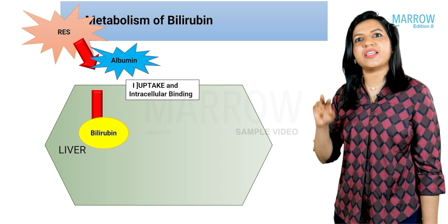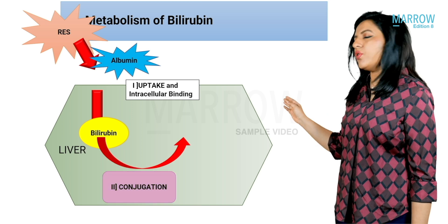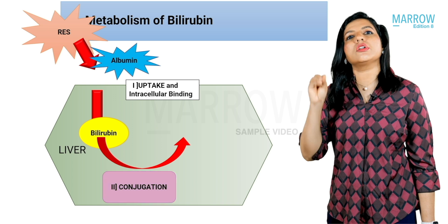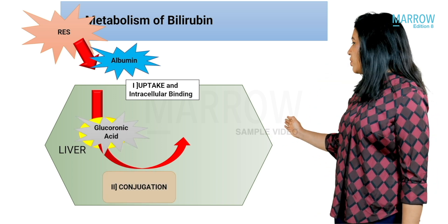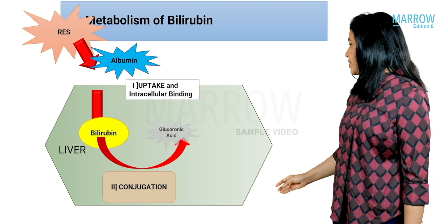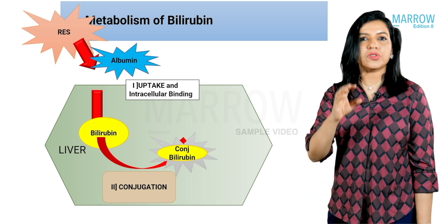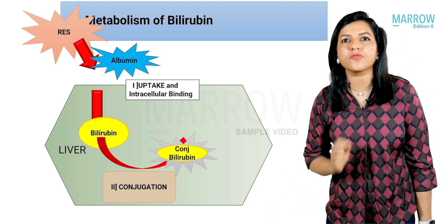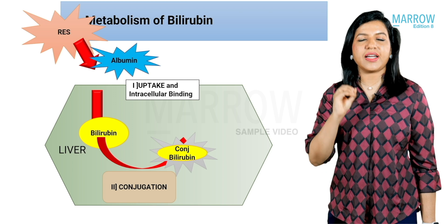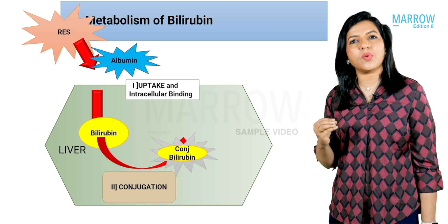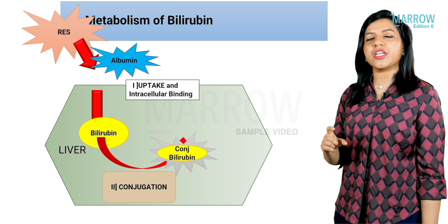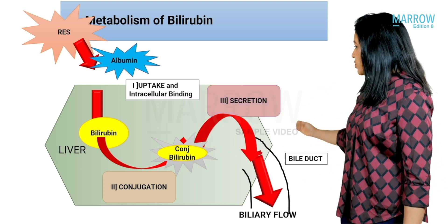The second step inside the liver cell is conjugation. Bilirubin combines with glucuronic acid to form conjugated bilirubin. The enzyme required is UDP-glucuronosyltransferase (UGT). This conjugated bilirubin is then ready for secretion.